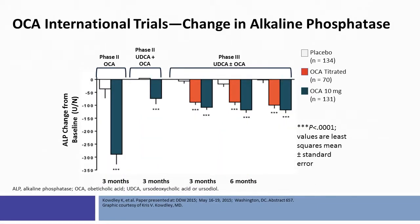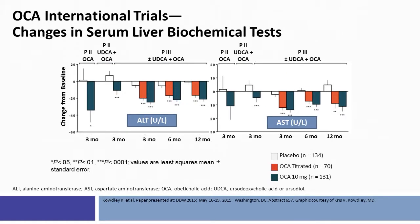This slide shows the change in alkaline phosphatase in the obeticholic acid international trials. The percentage and absolute change in alkaline phosphatase would be greatest in patients on monotherapy, as expected. Patients in the phase 2 monotherapy study had a reduction in alkaline phosphatase of almost 300 units per liter, whereas patients already on ursodeoxycholic acid showed relatively smaller absolute reductions. Consistent with direct anti-inflammatory effects, ALT and AST also showed reductions in both the phase 2 and phase 3 studies.